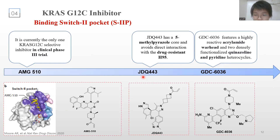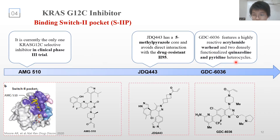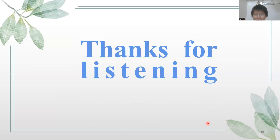MRTX-0902 and GDC-6036 are two novel molecules targeting KRAS G12C under development. MRTX-0902 has a 5-membered pyrazole core and avoids direct interactions with the drug-resistant H95 residue. GDC-6036 features a highly reactive acrylamide warhead and densely functionalized quinazoline and pyridine heterocycles. This suggests that targeting KRAS is indeed possible and promising results are on the horizon for treating patients with KRAS-mutated cancers. Thanks for listening.